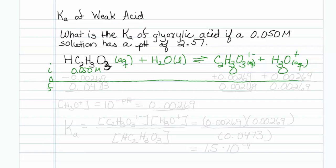Don't forget that hydronium concentration is equal to 10 to the minus pH. So that would be equal to 0.00269. I know the hydronium concentration is 0.00269, which means the change for hydronium is plus 0.00269.